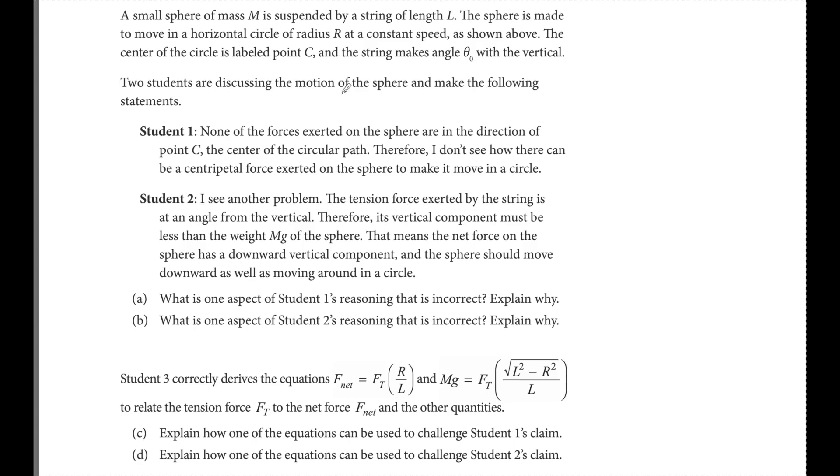In the first part, we're going to have two students discussing the motion of the sphere. Student one says none of the forces exerted on the sphere are in the direction of point C, the center of the circular path. Therefore, I don't see how there can be a centripetal force exerted on the sphere to make it move in a circle. That's not correct. Student two says I see another problem. The tension force exerted by the string is at an angle from the vertical. That's correct. Therefore, its vertical component must be less than the weight mg of the sphere. That means the net force on the sphere has a downward vertical component and the sphere would move downward as it was moving in a circle. Also not entirely correct.